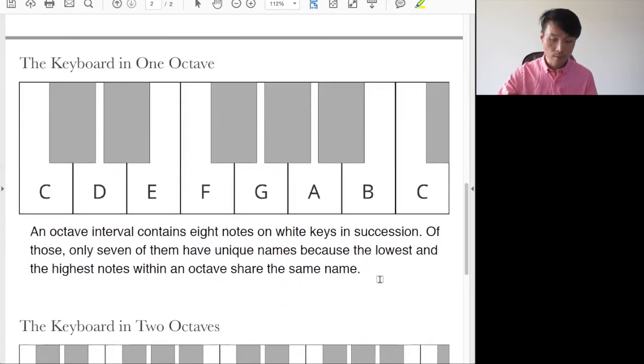The keyboard in one octave. An octave interval contains eight notes on white keys in succession. Of those, only seven of them have unique names because the lowest and the highest notes within an octave share the same name.